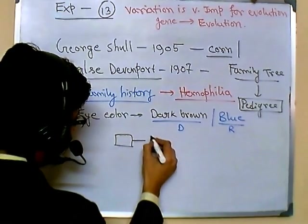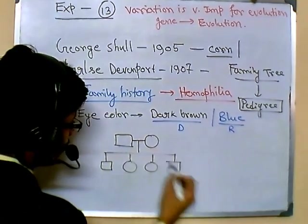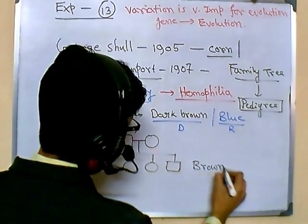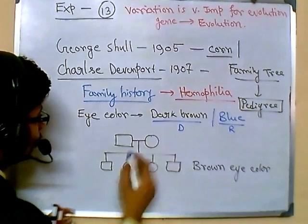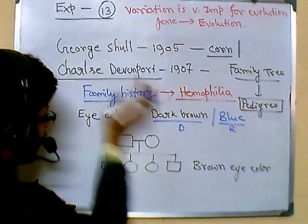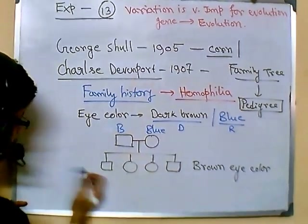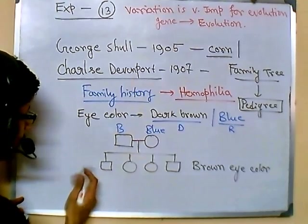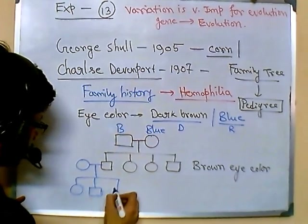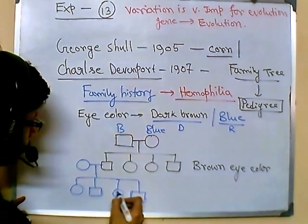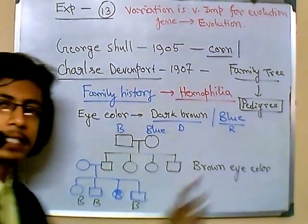In the pedigree, one male and one female are crossed, and they have children — say two boys and two girls — and all of them have brown eye color. After that, among the father and mother, one has brown eyes and the other has blue eyes. When one member of this generation marries another person, among their children, one of them will have blue eyes and the rest will have brown eyes.